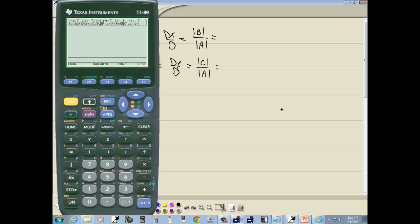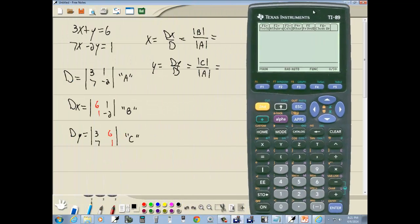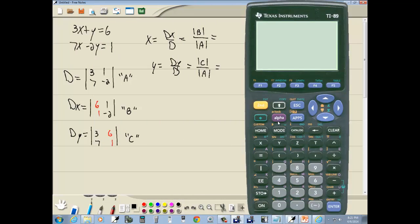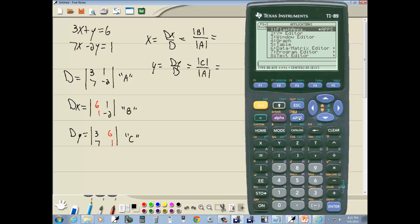So let's go to our calculator. Now I want to enter these in so I'm going to do my apps, go into the data matrix editor, 6, and I want to choose 3 for new.